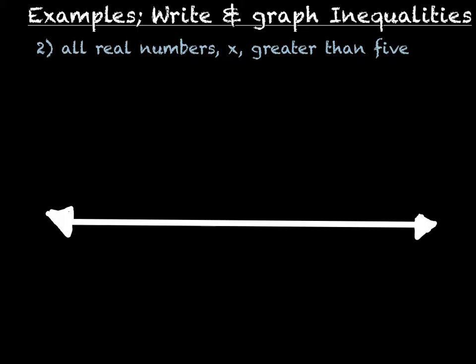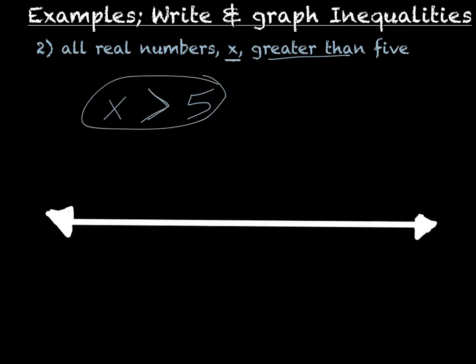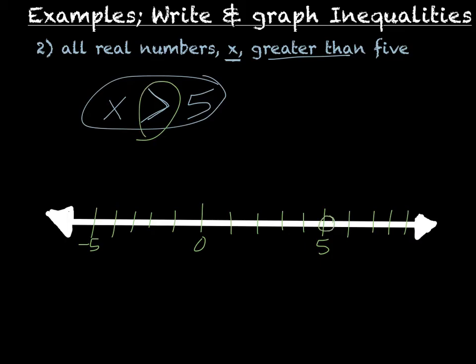For this next one: all real numbers x greater than 5. So I write x greater than 5. Now I need to graph it on the number line. I need to put a circle on 5, and because it's not an 'or equal to' sign, it's going to be an open circle on 5. Then x is greater than that, so it fills to the bigger numbers and continues on forever.